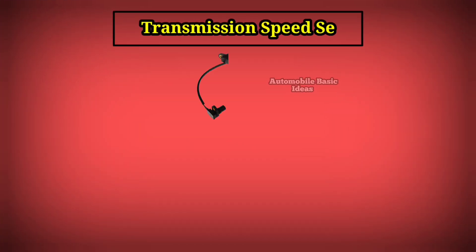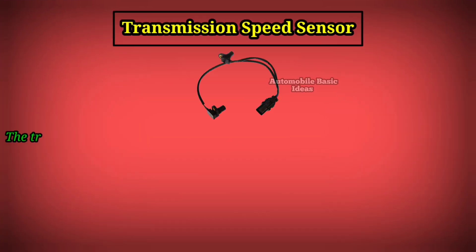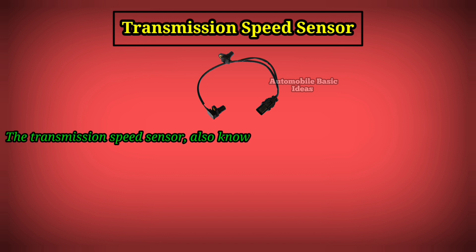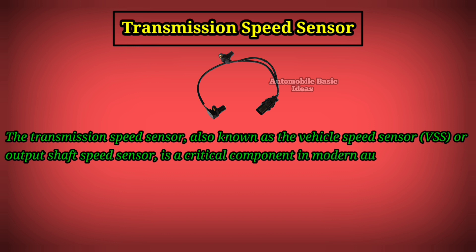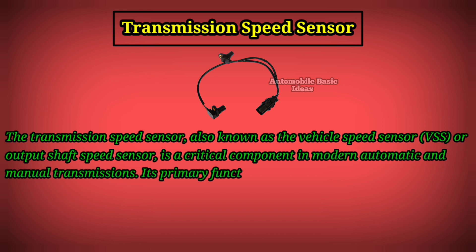The transmission speed sensor, also known as the vehicle speed sensor (VSS) or output shaft speed sensor, is a critical component in modern automatic and manual transmissions. Its primary function is to monitor the speed of the vehicle and provide this data to the engine control unit (ECU) or transmission control module (TCM).